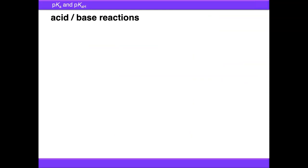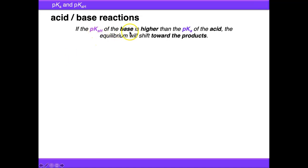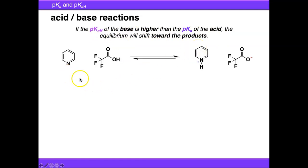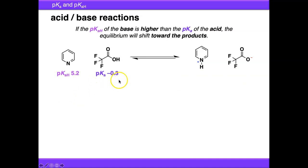Another area where pKa and pKaH are very helpful is in selecting acids and bases — how strong an acid or base do you need to achieve what you want in your reaction? A useful rule of thumb: if the pKaH of the base is higher than the pKa of the acid, the equilibrium will shift towards the products. For instance, with pyridine and TFA going to pyridinium and trifluoroacetate, the pKaH of pyridine is 5.2 and the pKa of TFA is −0.3 — five orders of magnitude higher — so we'd expect the equilibrium to be weighted towards the products.